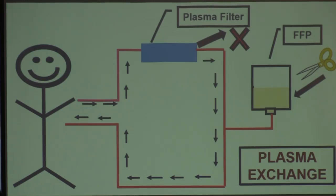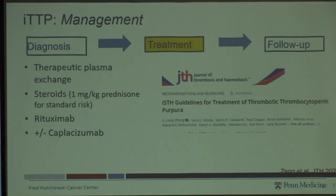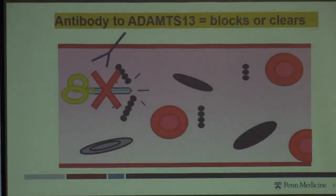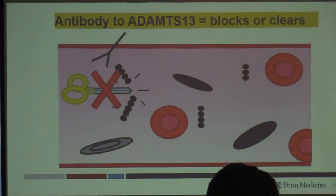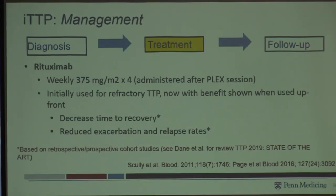Plasma exchange can take a while — patients may need multiple treatments, and some with very refractory TTP need to stay in the hospital for weeks. The other approach to therapy is steroids and rituximab, which target the antibody against ADAMTS13, trying to make it go away. Rituximab was originally used only for patients very refractory to treatment, but we've moved it up earlier. It's been shown to decrease time on plasma exchange and potentially reduce the exacerbation rate — meaning the chance of getting TTP again.